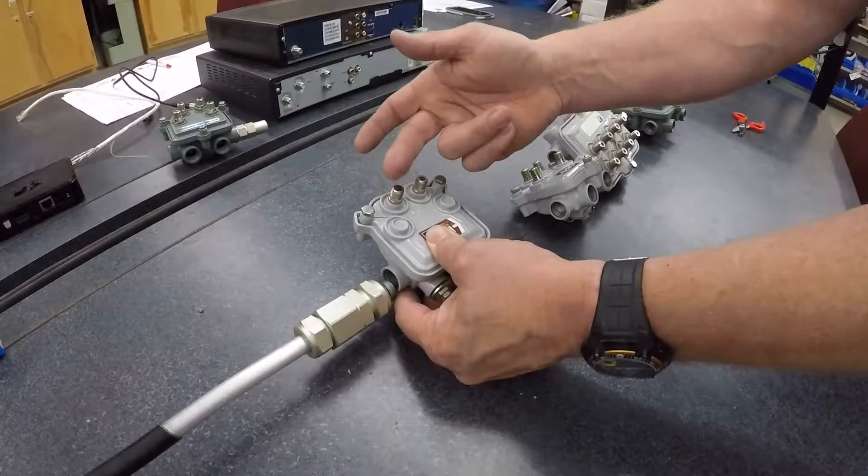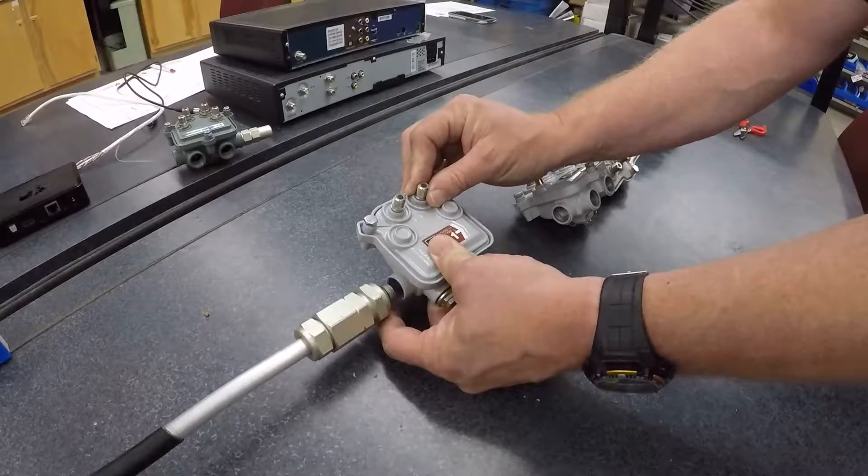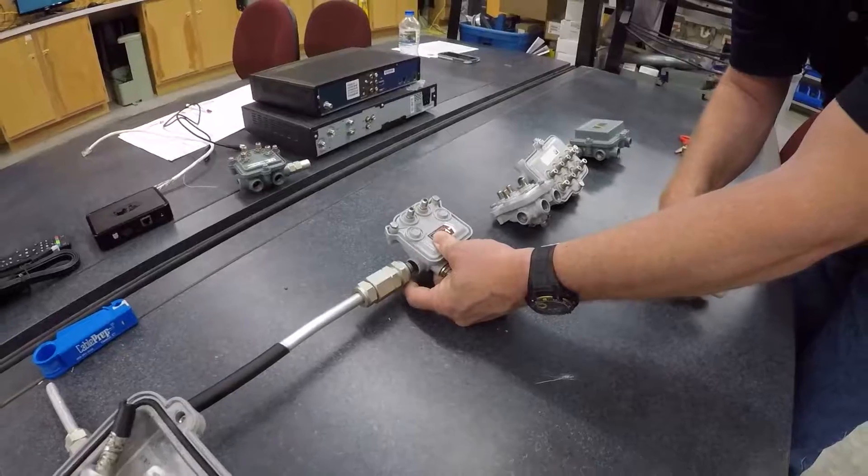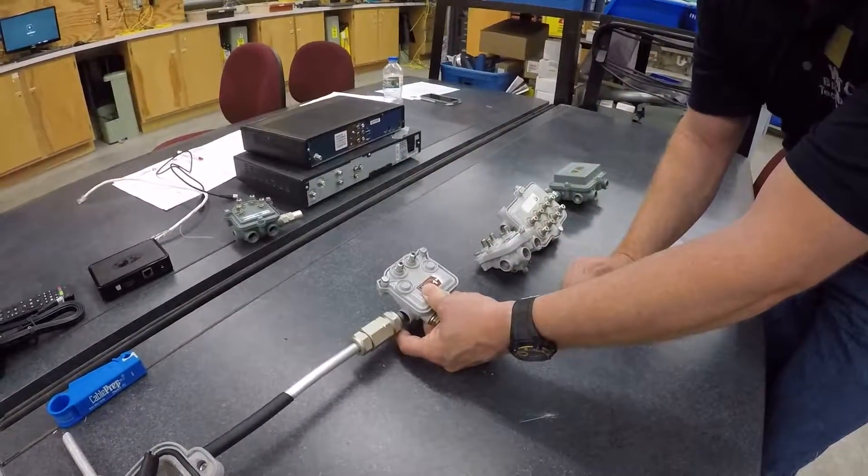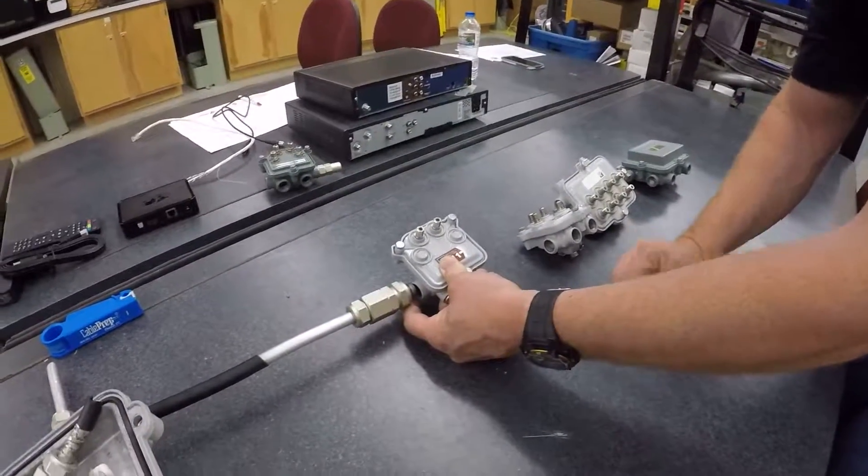But coming off of that, you're going to have an RG6 drop cable or usually an RG11 drop cable coming off. Either in the pad, it'll be buried to your customer's house or it'll be an aerial drop with a messenger cable to your customer's house.